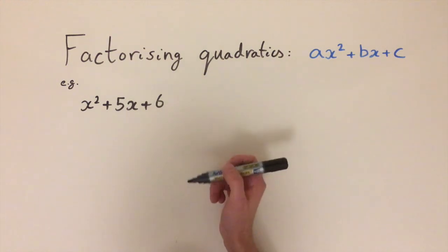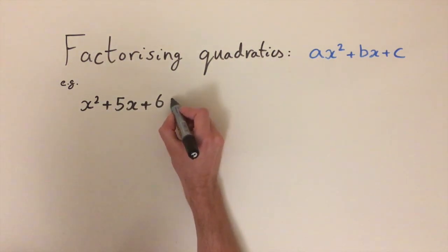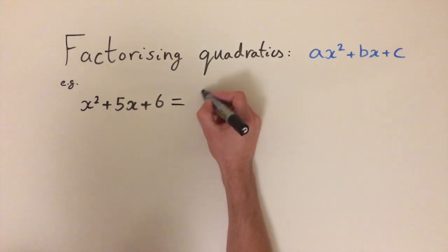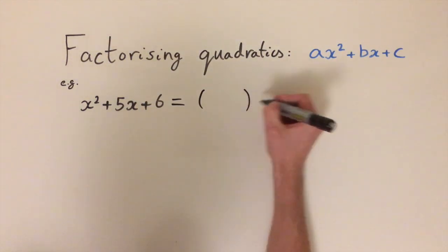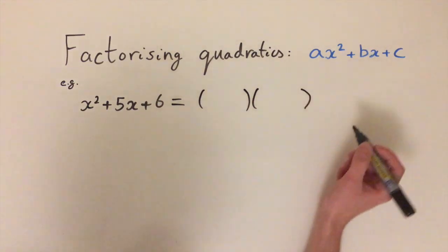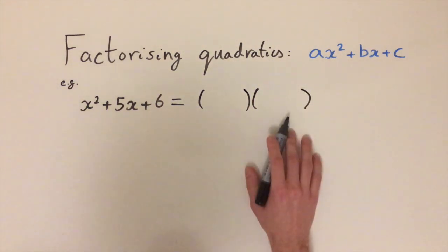In this video we're going to be looking at factorising them directly. So we want to write this quadratic as the product of two linear factors. We want to write it as two brackets involving x's multiplied by each other.